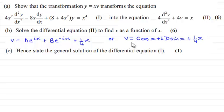And we got these two possible general solutions. v equals ae to the ix plus be to the minus ix plus a quarter x. Or, we had v equals c cos x plus id sin x plus a quarter x.